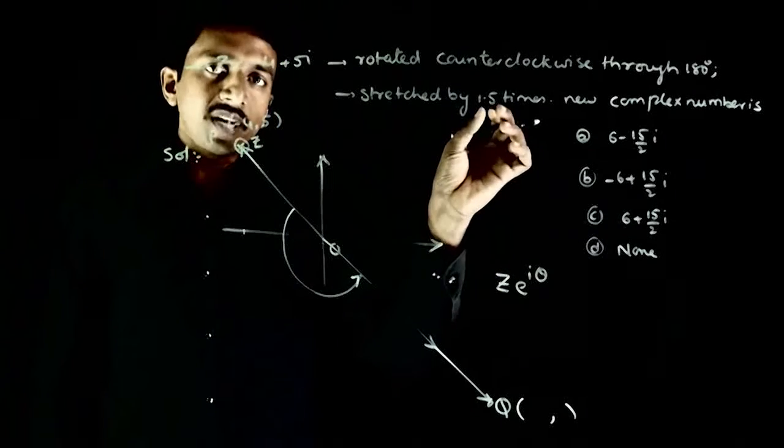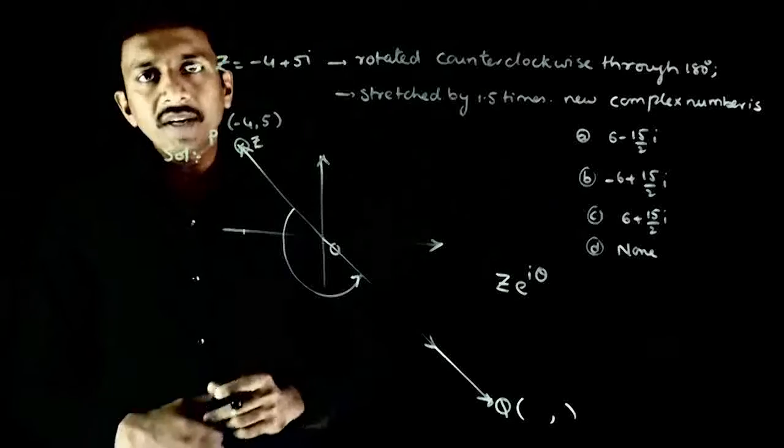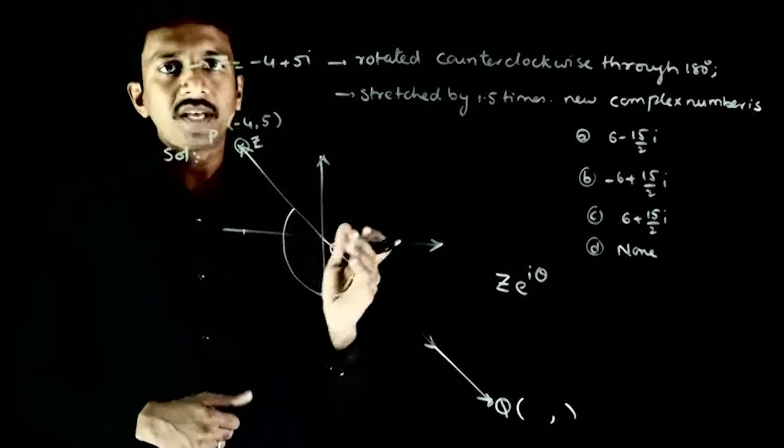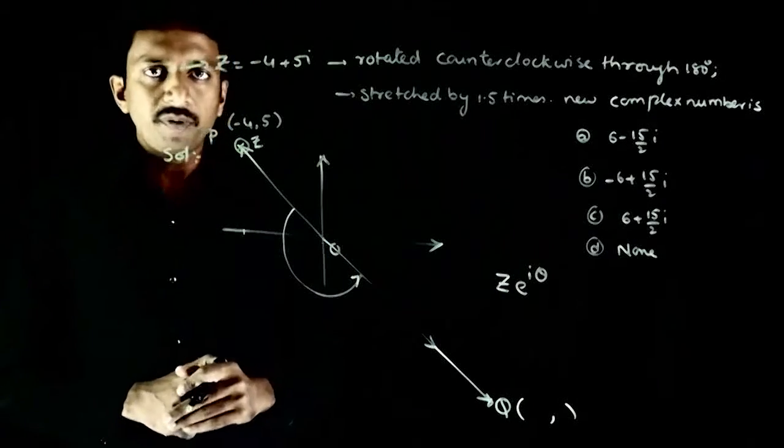Complex number multiplied by a real number increases the magnitude. Multiplied by e^(iθ) gives rotation. So this is a basic concept of rotation.